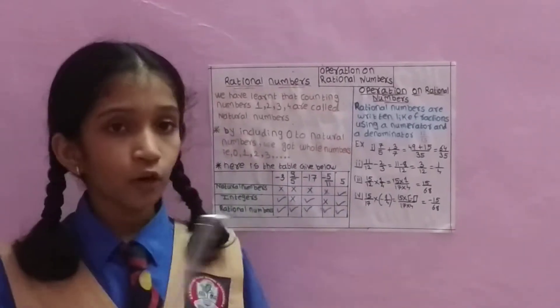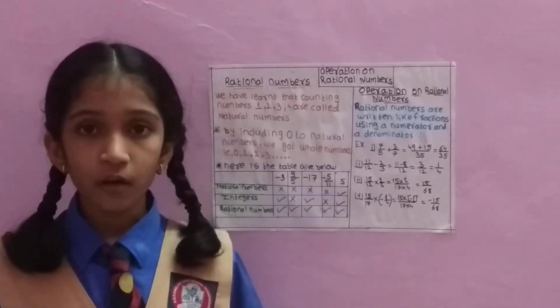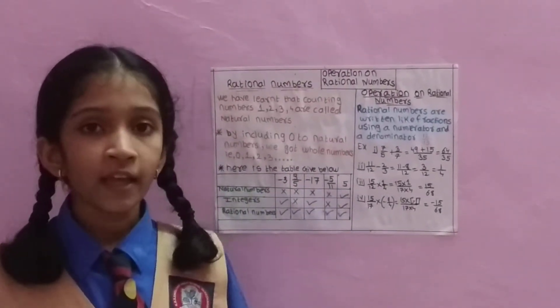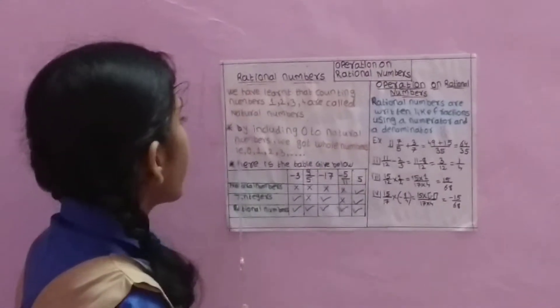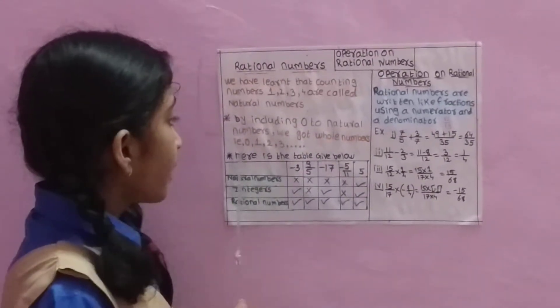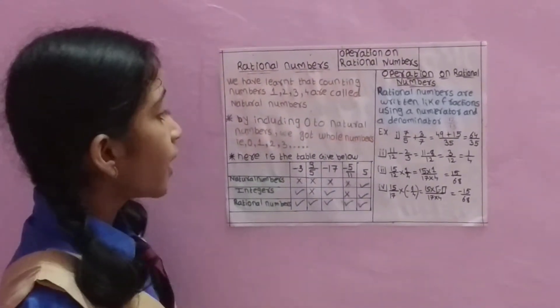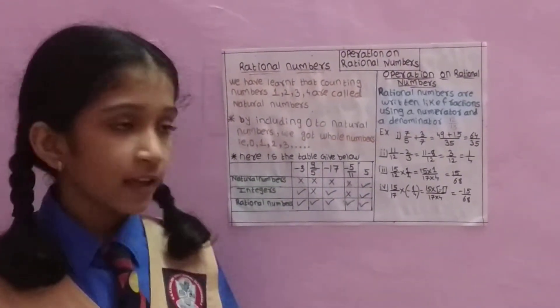By including 0 in natural numbers, we get whole numbers — like 0, 1, 2, and 3.